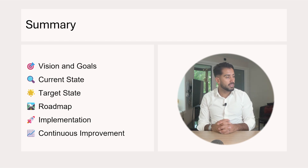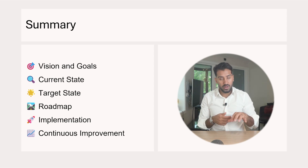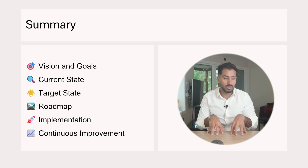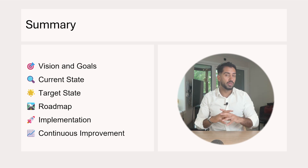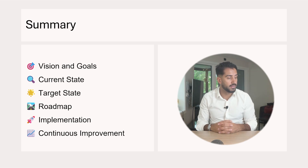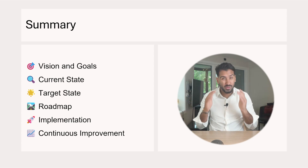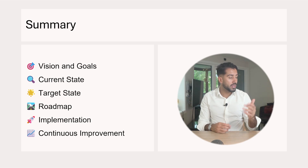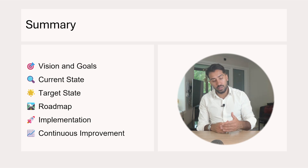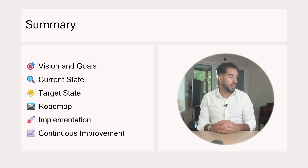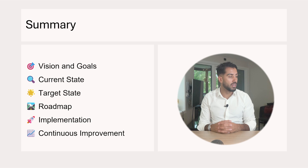To summarize the data strategy: vision and goal before you start, the current state you must understand, the target state — what does utopia look like — the roadmap, and then implementation where you're delivering. And as you're doing that, continuously look back and improve on what you've done so far.